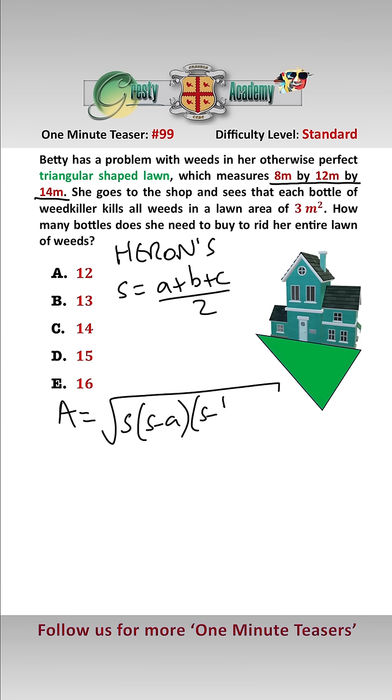And once we've done that, the area is equal to the square root of S, S minus A, S minus B, S minus C, which does look scary but isn't quite as bad as it looks.